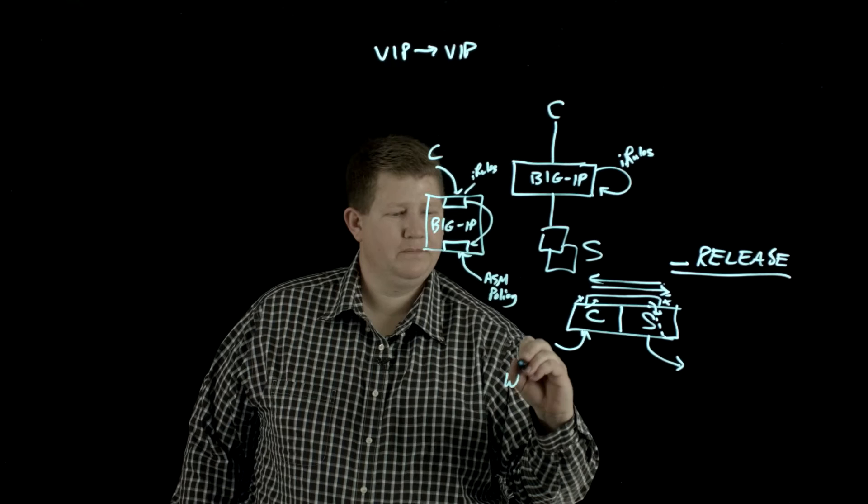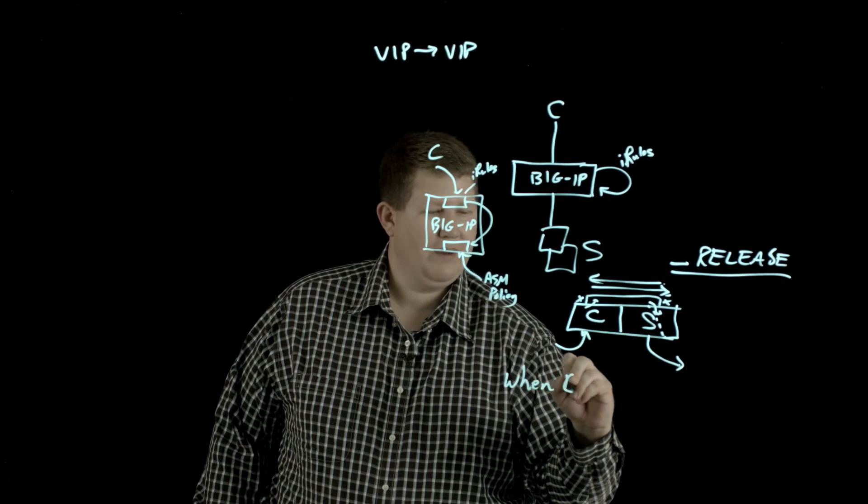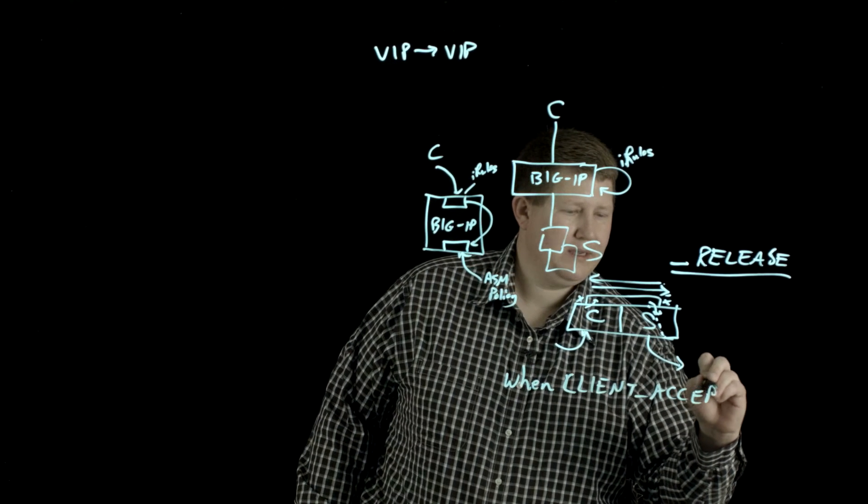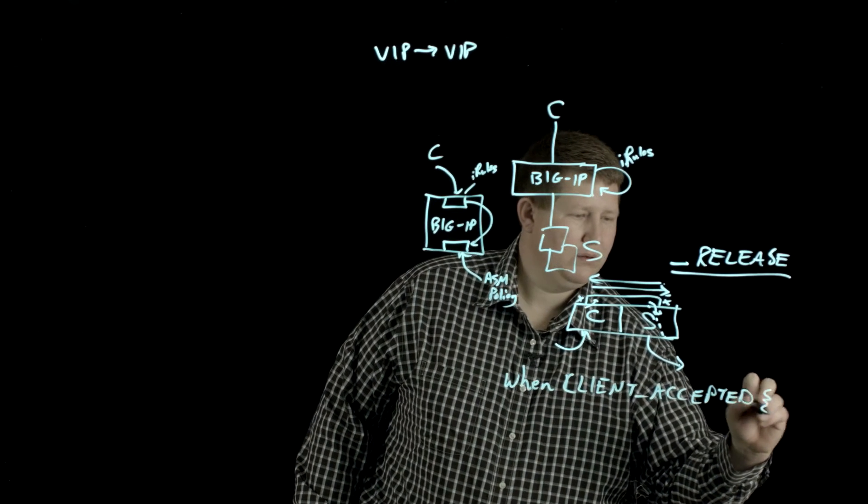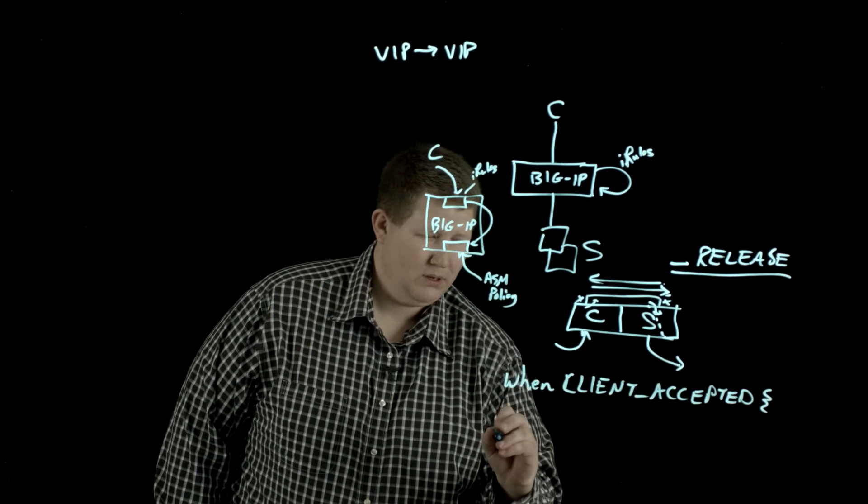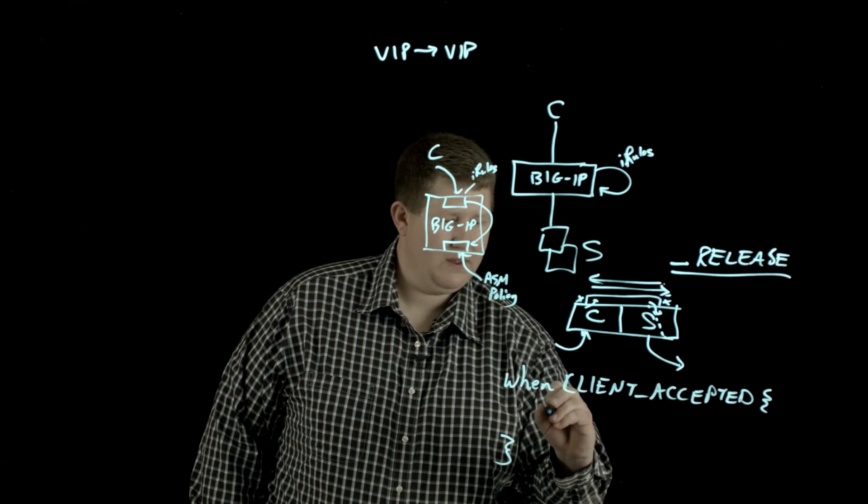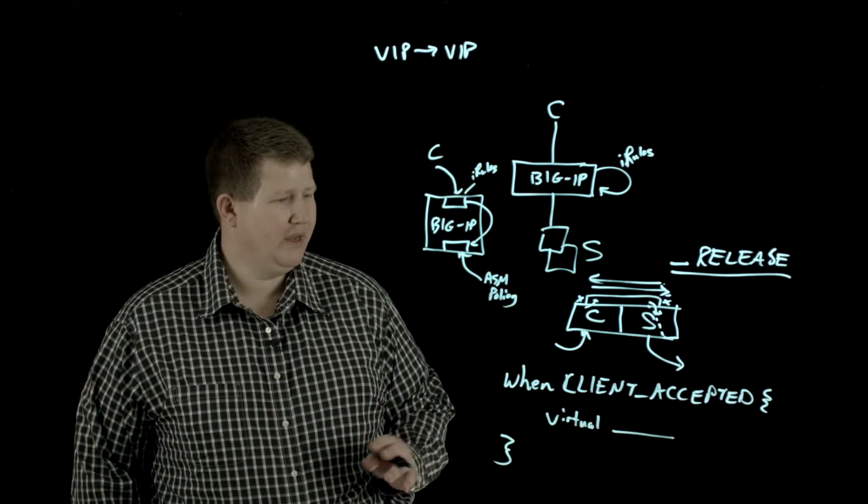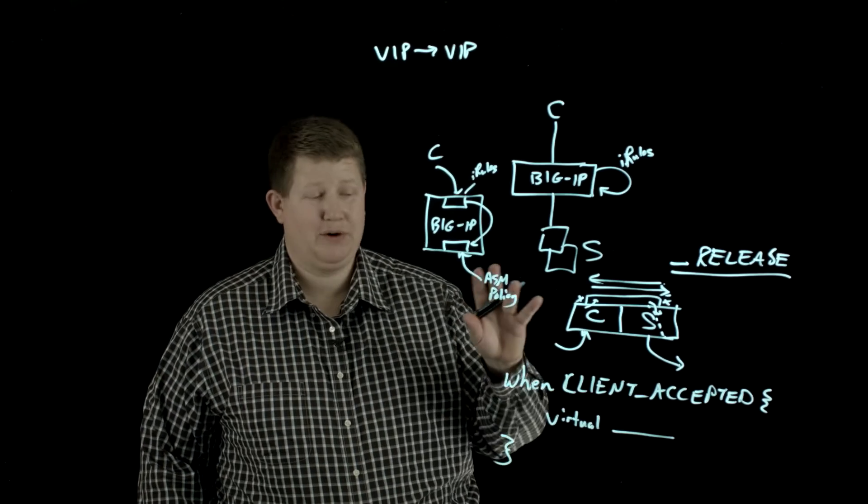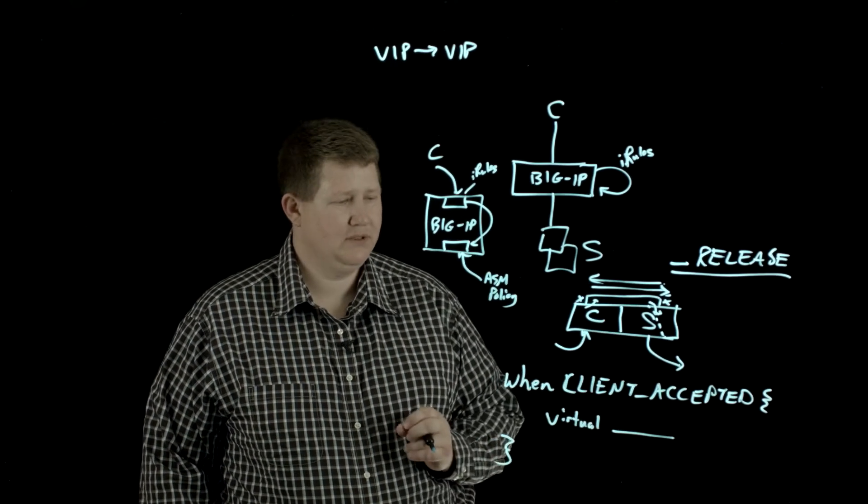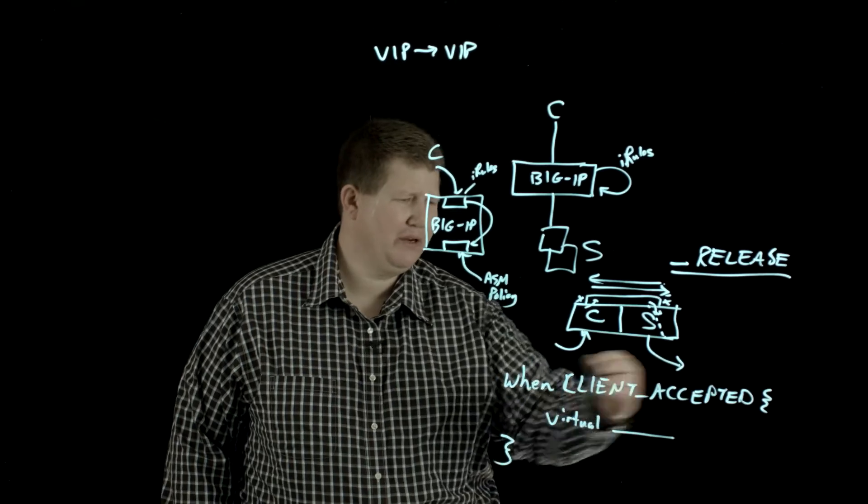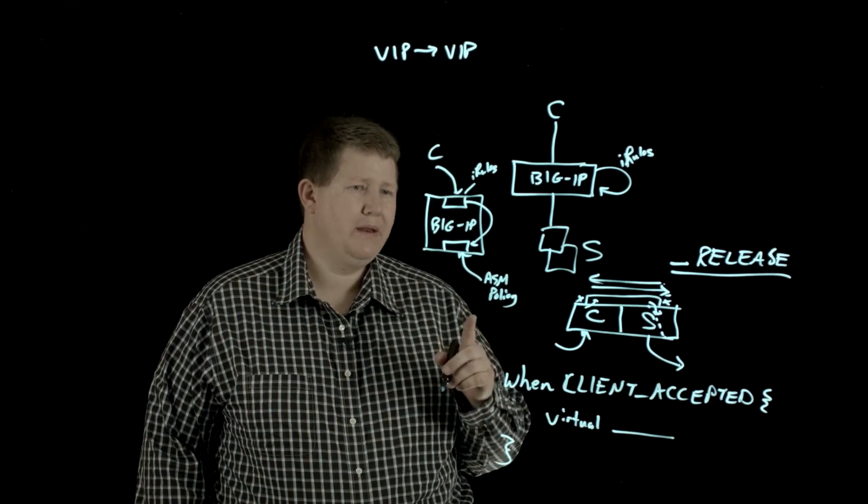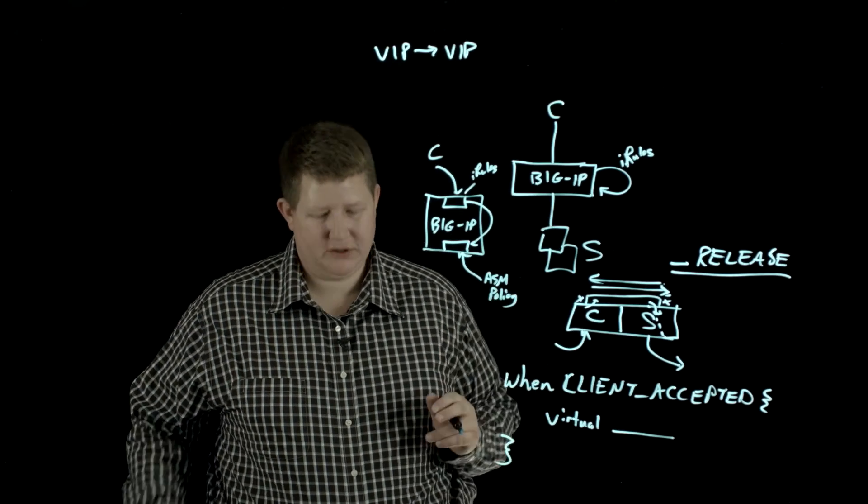is you have when client accepted. And then you have your closing brackets. And then here, that's just the command virtual, and then whatever your virtual name is. And so that allows you to pass the traffic from the front side VIP back to the back side. And of course, you can do it later. It doesn't have to be in the client accepted event. But so that's one scenario in which we've used in the production environment.